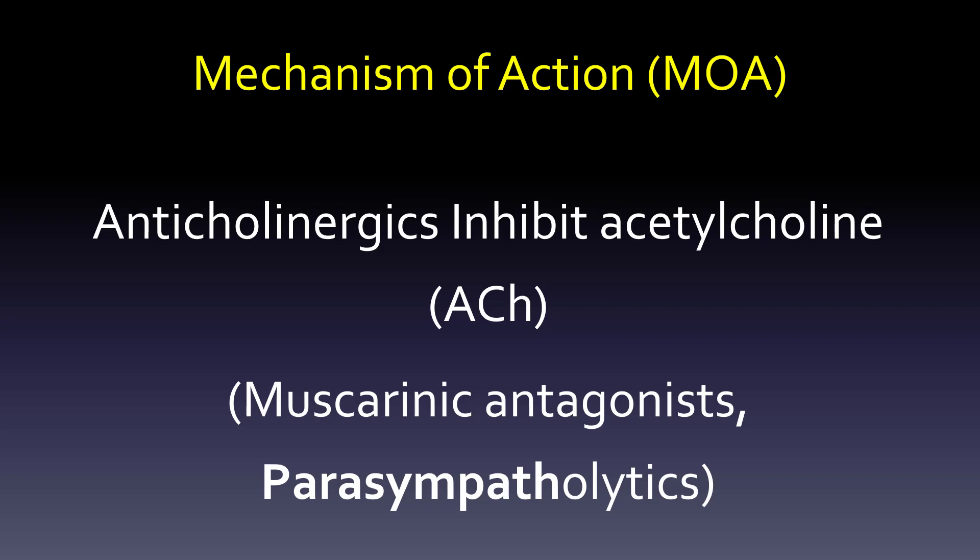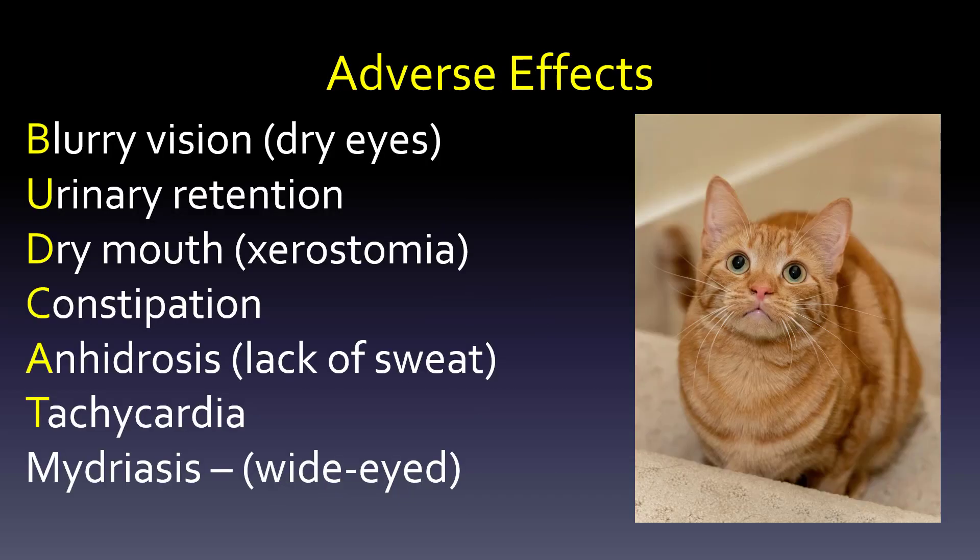What does BUDCAT stand for? B for blurry vision — that's dry eyes. U for urinary retention — again, dry; we're not urinating. Dry mouth — you might see it as xerostomia. Constipation: if we pull water out of the bowel, we're going to plug things up. Anhydrosis is a lack of sweat.